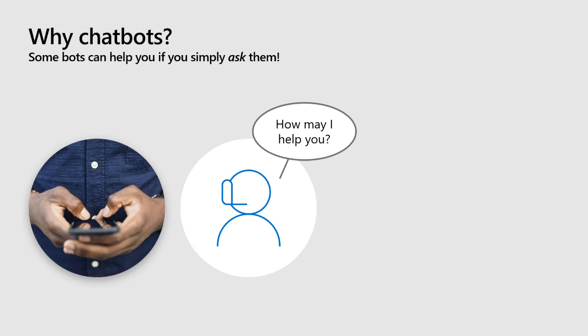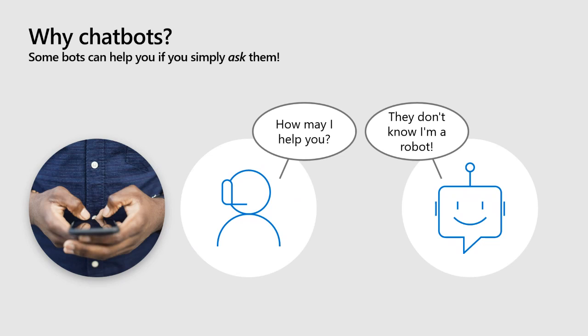Specifically, let's talk about chatbots. What defines a chatbot is pretty much a bot that will help you based on the way you're communicating — usually via voice or text. In this example, somebody is sending a message to a chat window where a bot is there to ask 'How may I help you?' And usually in some cases we don't even know that it's a bot we're chatting with, but they can be helpful.